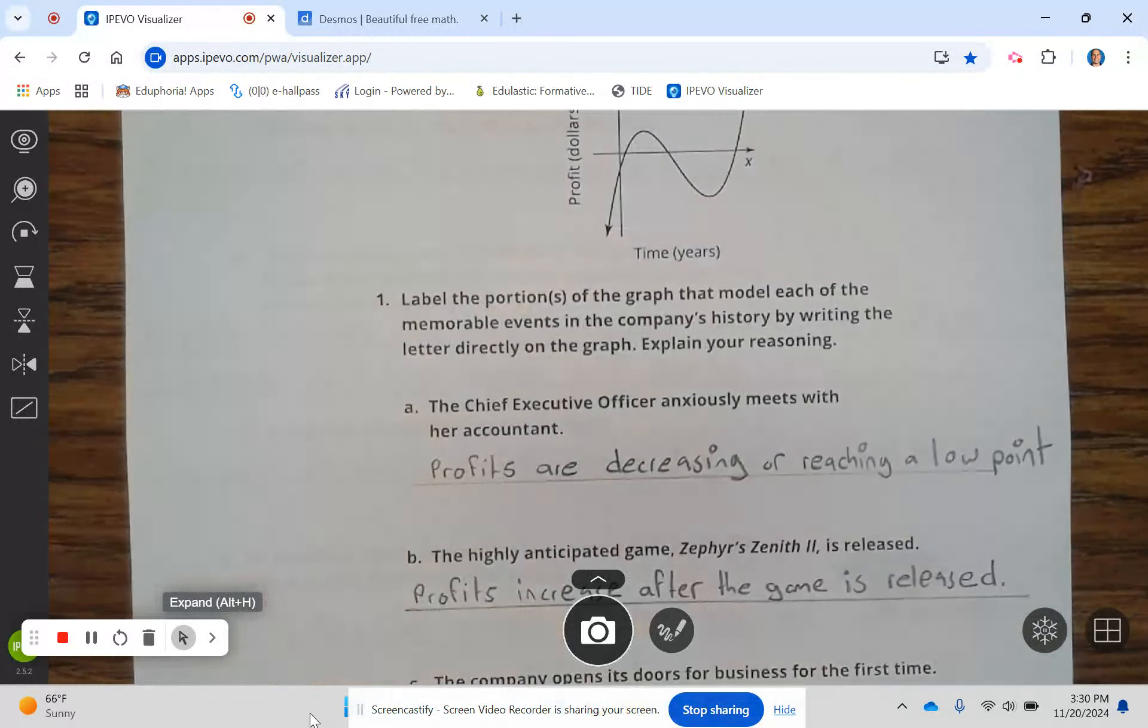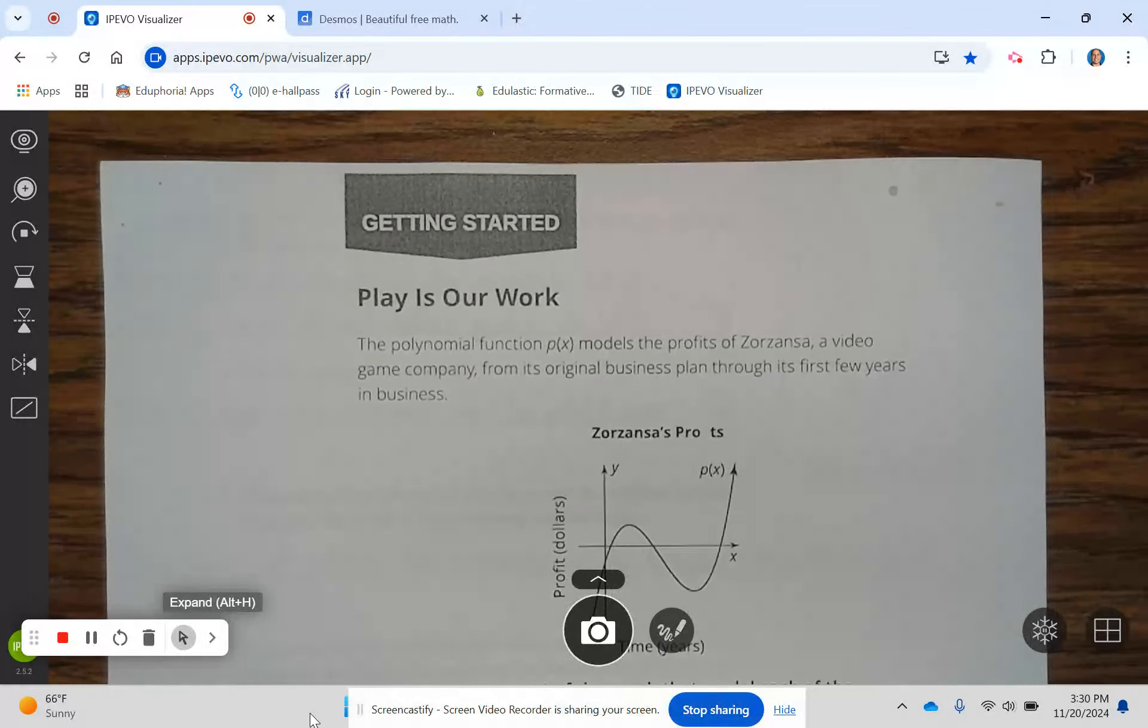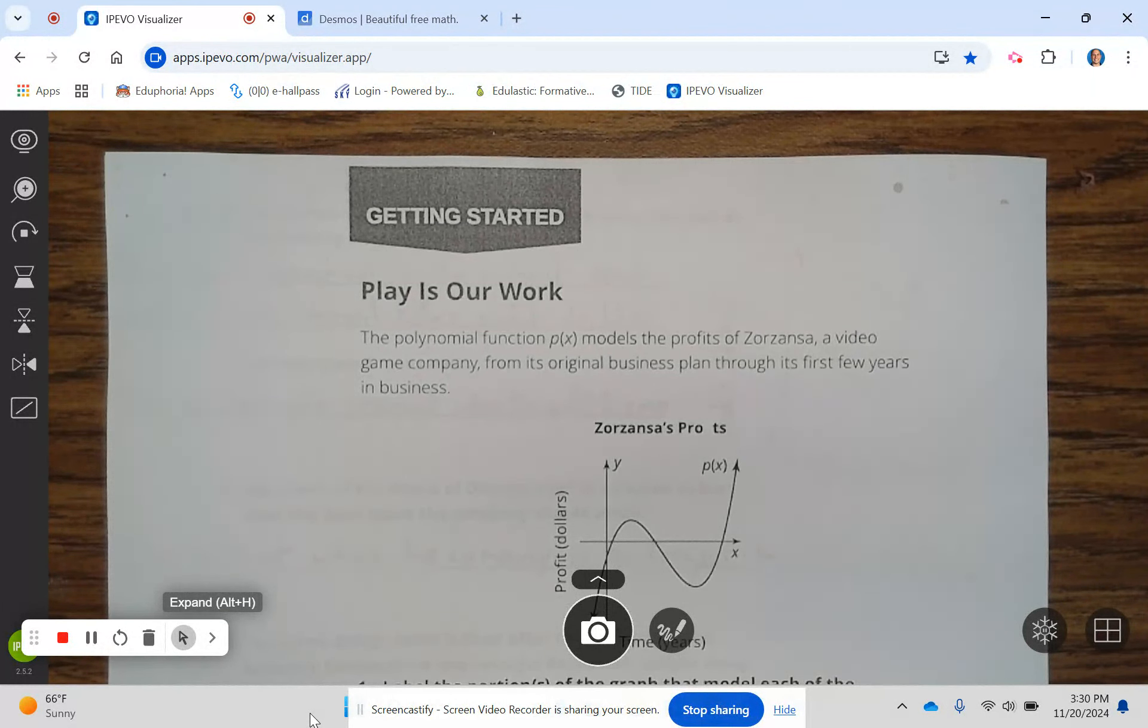Let's take a look at the next page. Getting started. Play is our work. The polynomial function P of X models the profits of Zorazanza, a video game company, from its original business plan through its first few years in business.